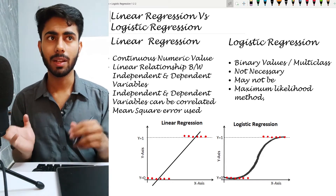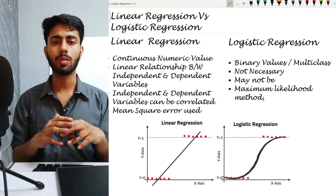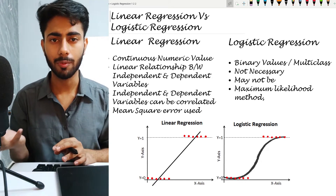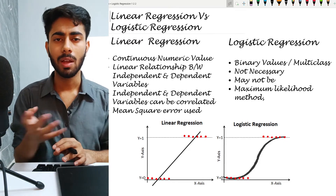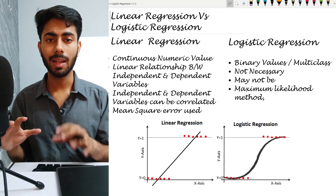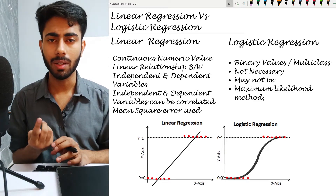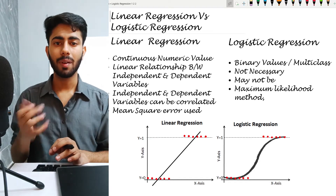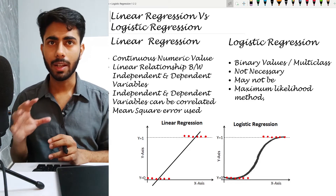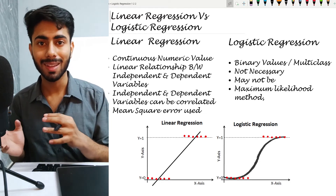The differences are: in linear regression we predict continuous numeric outputs — for example in house price prediction, the output can be any number like 70 lakh, 60 lakh, or any value. But in classification style problems the output has to be discrete. In logistic regression the output can be a binary number, for example 0 or 1, and multi-class classification is also possible.